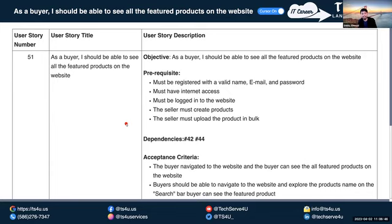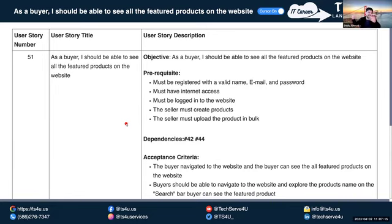There are two more portals: the buyer portal and the main website. From the seller portal, sellers can upload new products, update products, and mark products as featured. On the buyer side, buyers can see reviews, product details, dimensions, and all product attributes — meaning all details related to the product.